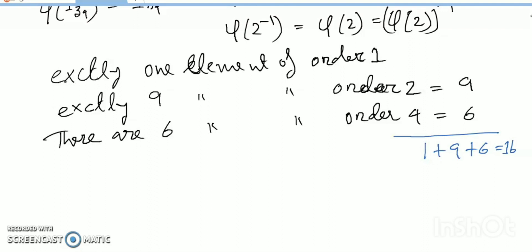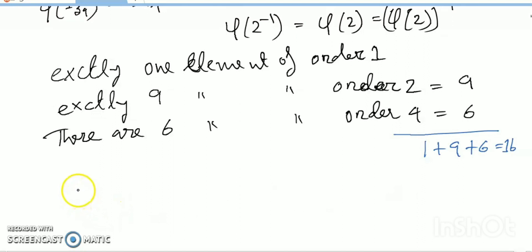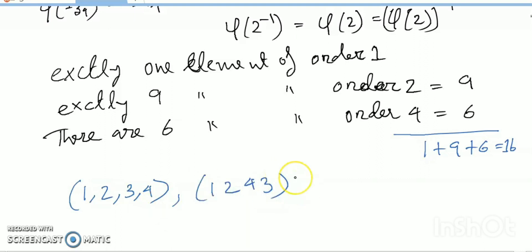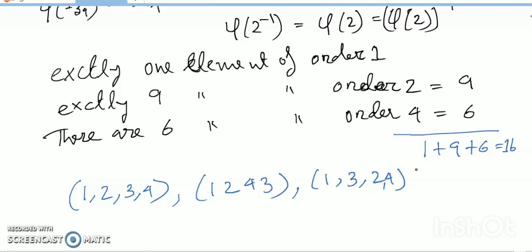By the 4-cycles — (1,2,3,4), (1,2,4,3), (1,3,2,4) — each of them can be gotten 2 ways by swapping the two 4-cycles in the subgroup as the image of generators 1 and 3. So overall 3 × 2 = 6 homomorphisms of order 4.